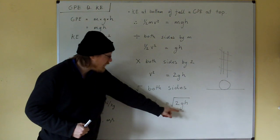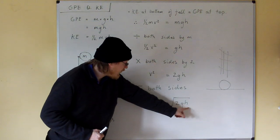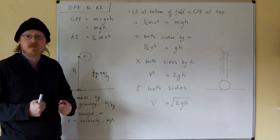So if we put in our values for g and our values for h, we can calculate the velocity at the bottom of the fall.